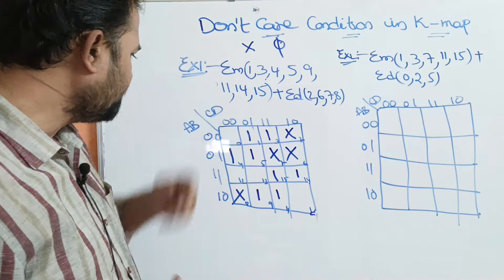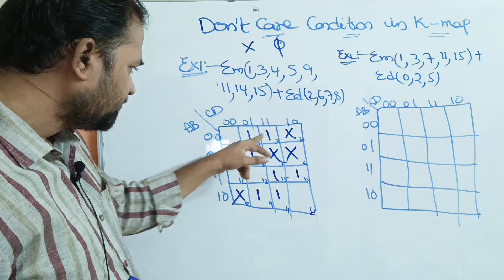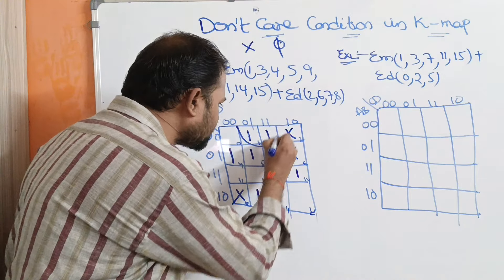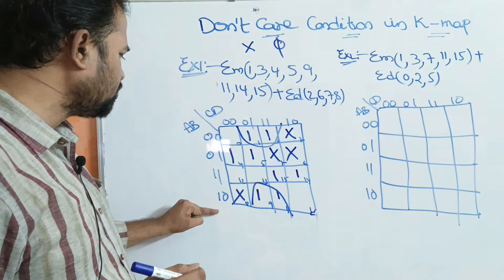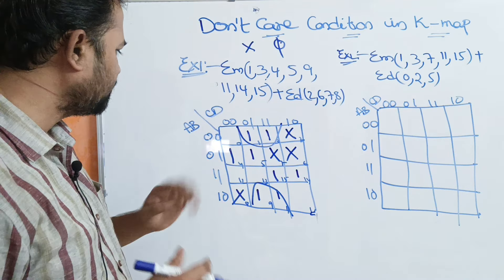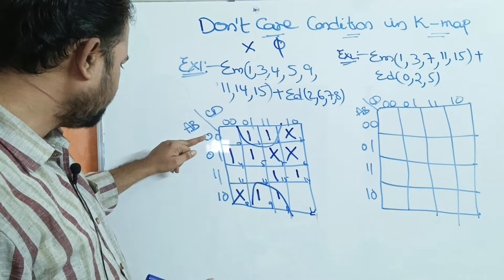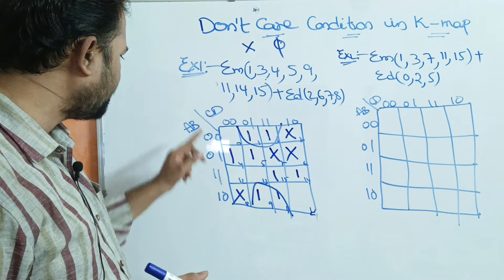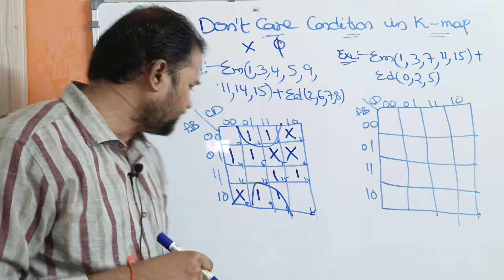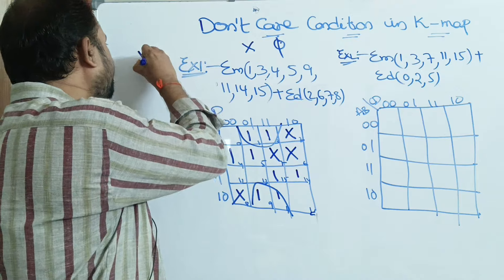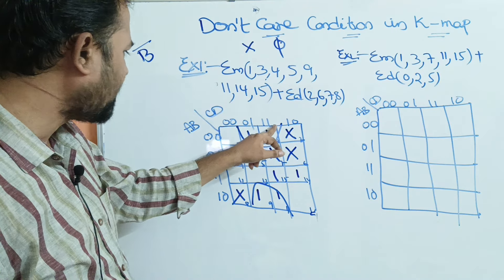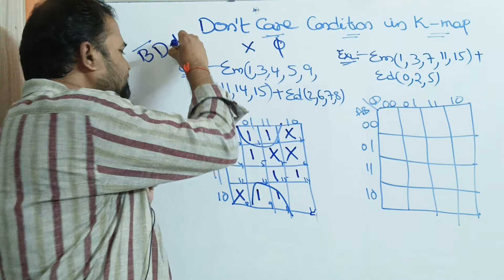Now let us see this problem — the mapping is already done. We have 2 cells here and, on the opposite side, also 2 ones. So we can make these 4 cells as a group, because 0,0,1,0 and adjacent cells differ by only one variable — A is changing from 0 to 1. In sum of products, 1 means actual variable and 0 means complement. Here, the second value 0 is common: that is B-bar. And the value 1 is common: that is D. So the first term is B-bar D.